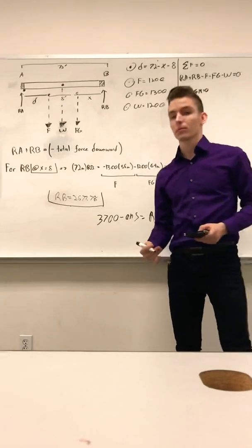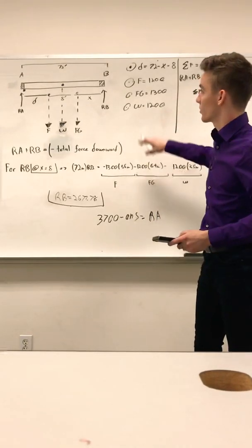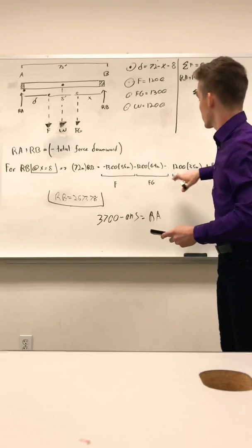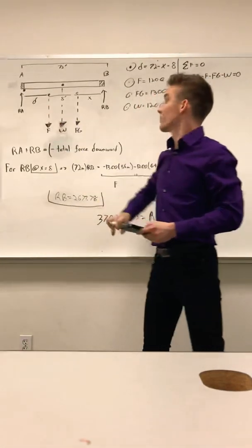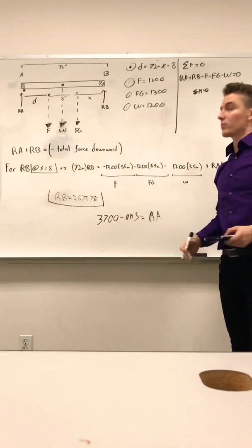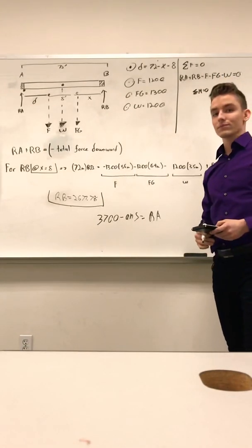As you continue through the problems, all you have to do is plug in different axes, make sure to change your lengths, continue to solve for this distance D up here, and it should be fairly simple, and you can subtract to find point A. Good luck.